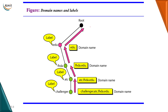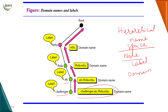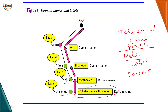A domain name is assigned to each node in the tree. A full domain name is a sequence of labels separated by dots, written from bottom to top - you can see this is a hierarchical namespace. For example, challenger.atc.fhda.edu is the domain name at a particular node. Domain names are of two types: fully qualified domain names (FQDN) or partially qualified domain names. A fully qualified domain name is terminated by a null string, that is, a dot. You can see this is a fully qualified name where it ends with a dot.